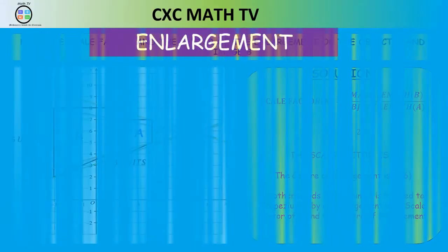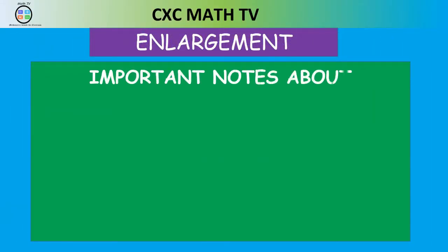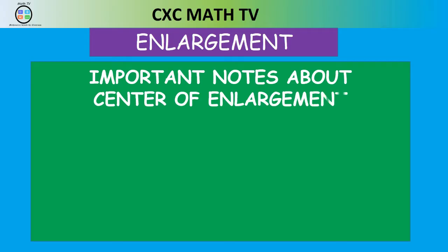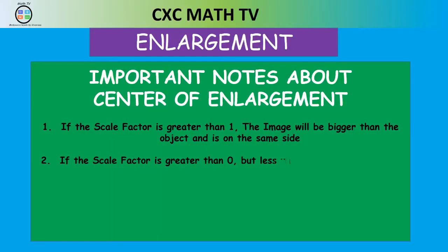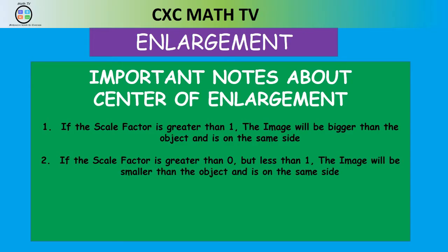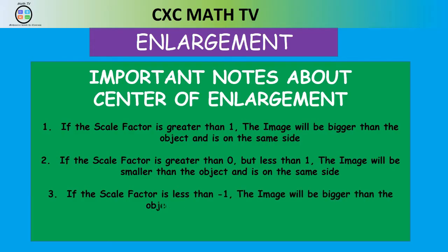There are some important facts about enlargement. Number one: if the scale factor is greater than 1, the image will be bigger than the object and on the same side. Number two: if the scale factor is greater than 0 but less than 1, the image will be smaller and on the same side. Number three: if the scale factor is less than negative 1, the image will be bigger but on the opposite side.